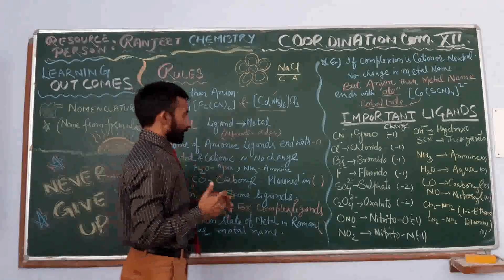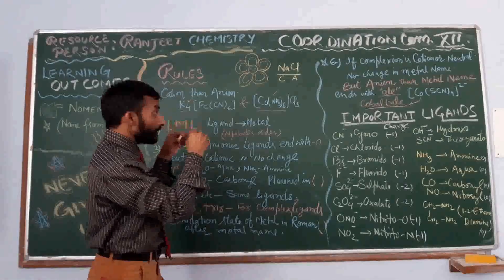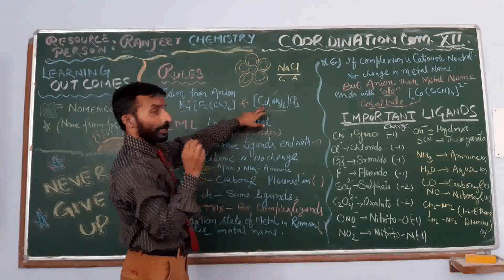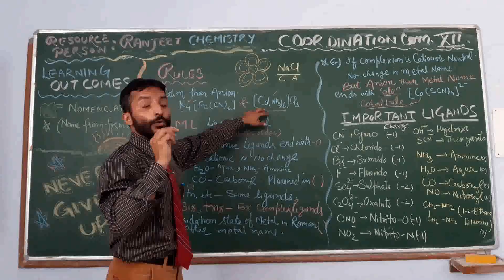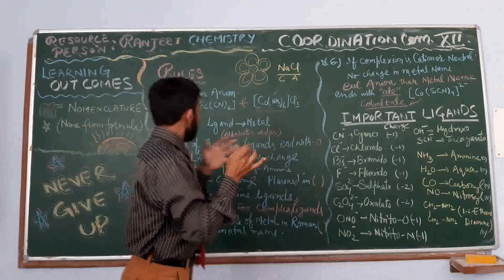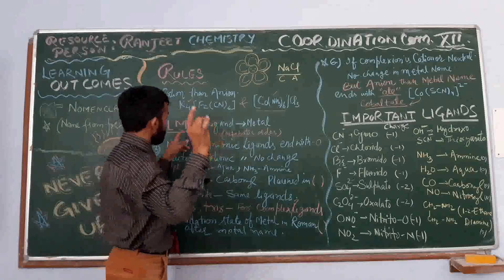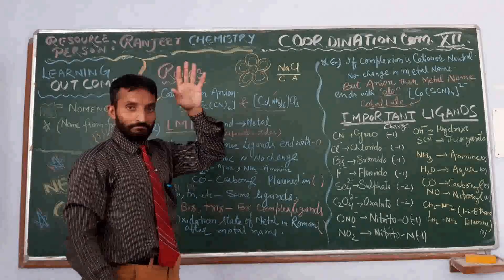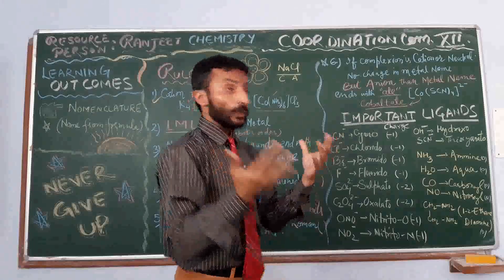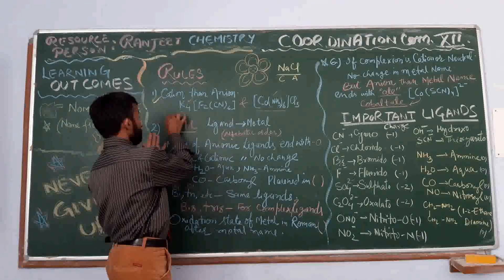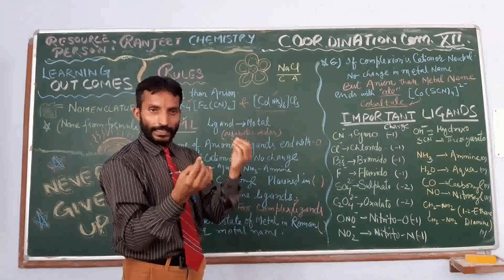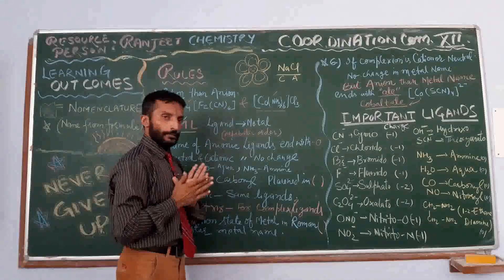The second rule is that whenever we start writing the name of the compound, the name of the ligands is written first, then it is followed by the name of the metal. For simplicity, I have used an abbreviation and a trigger: LML — Ligand, Metal, Ligand — to help you remember. Ligand name comes first, then followed by the metal.